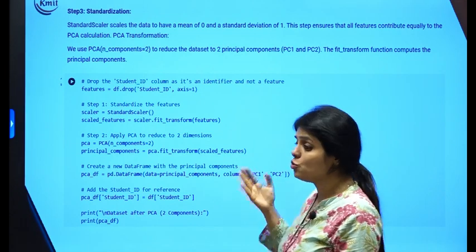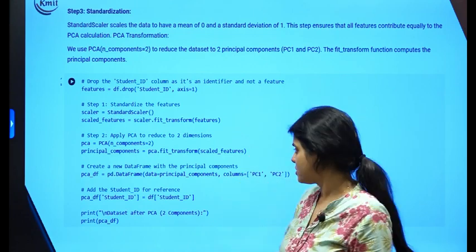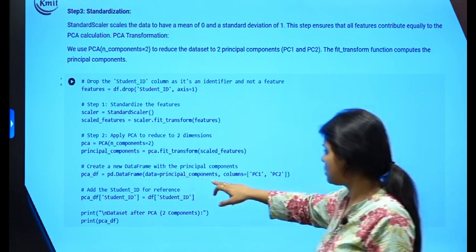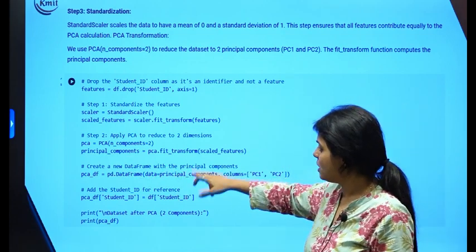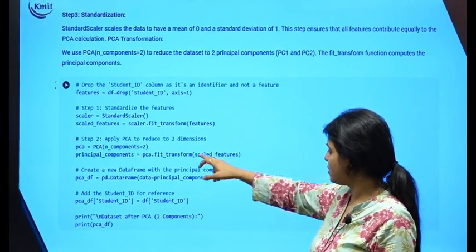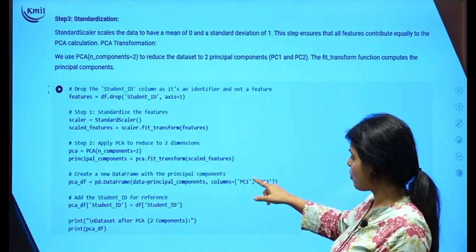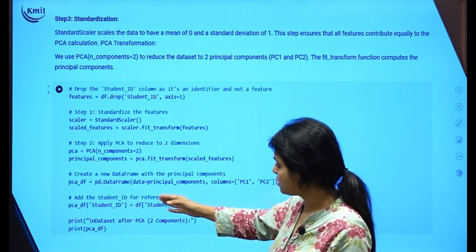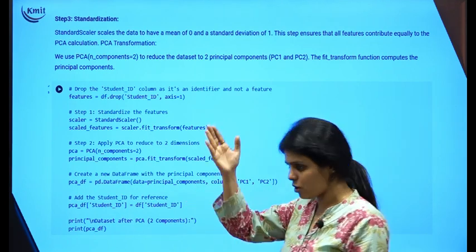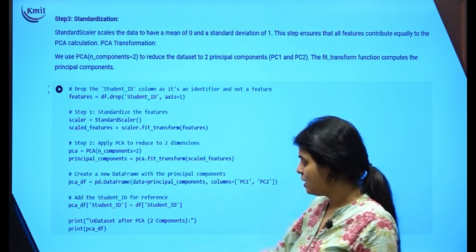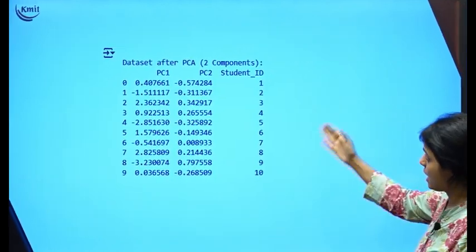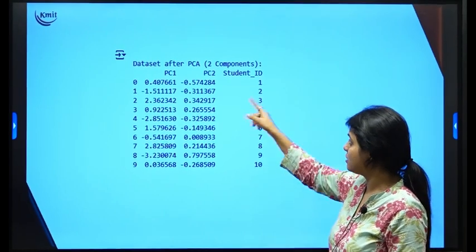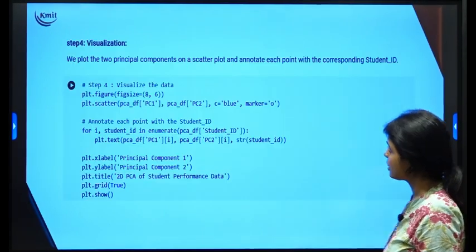I create a new dataframe with the principal components using pd.DataFrame, where the data is the PCA-fitted data, generating two components: PCA 1 and PCA 2. I add student ID as a reference column. The output shows PCA 1 and PCA 2 as the new feature map calculated from the PCA components.